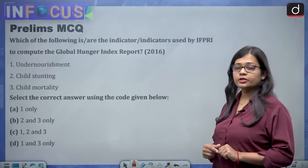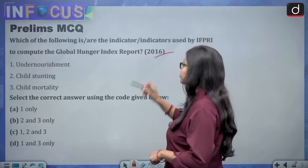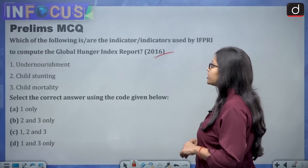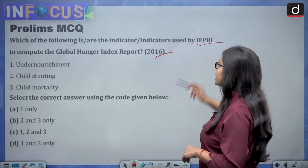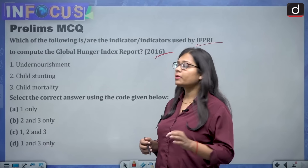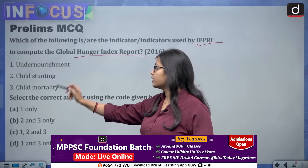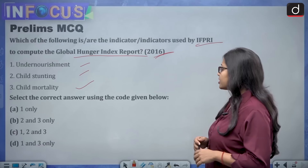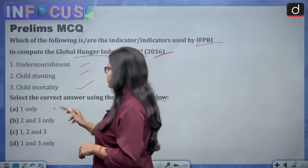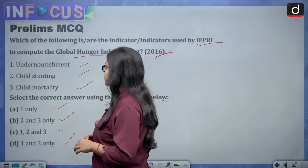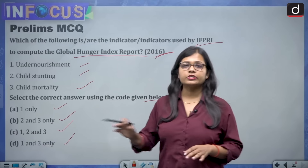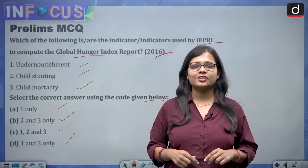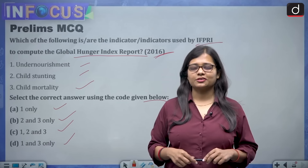For the prelims MCQ, this is a previous year question from 2016. Which of the following is or are the indicators used by IFPRI to compute the Global Hunger Index? Options: undernourishment, child stunting, or child mortality. The answer choices are: (1) one only, (2) two and three only, (3) one, two, and three, (4) one and three only. The answer has been discussed in the video — please give your answer in the comment section.